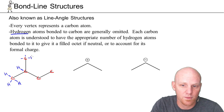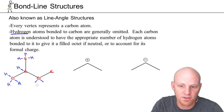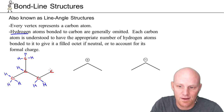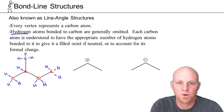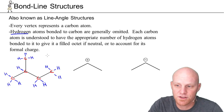This one here has one bond showing, so it needs three bonds to hydrogens to get a filled octet. This one has two bonds showing, so it needs two bonds to hydrogens to get a filled octet. And this carbon here, one bond showing, must therefore have three bonds to hydrogens to get a filled octet. This is how it works with hydrogens.